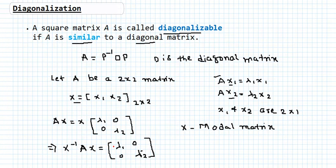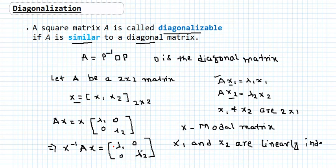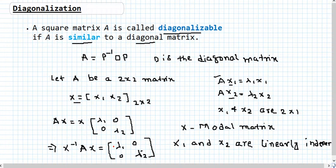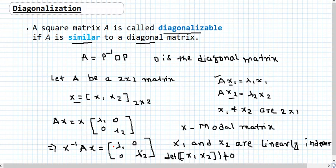Why? Because when the columns x1 and x2 are linearly independent, we know from the chapter on linear independence that if two vectors are linearly independent, the matrix formed by these two vectors has a non-zero determinant. So, determinant of X being non-zero means X is invertible. Therefore A is diagonalizable — meaning A is similar to a diagonal matrix — if and only if the corresponding eigenvectors are linearly independent.